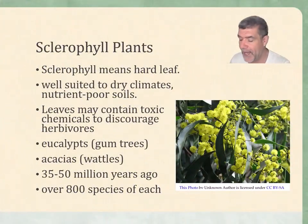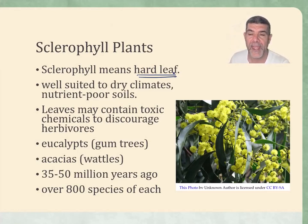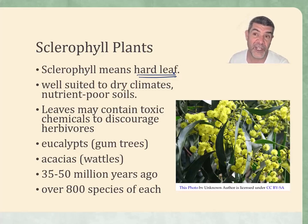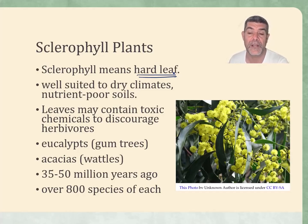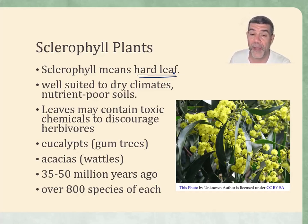So what are sclerophyll plants? Sclerophyll literally means hard leaf. One of the things you notice about a lot of Australian native plants is that the leaves are not like lettuce — they're not soft. They're very hard and crunchy, and they're filled with all sorts of different toxins, particularly the oils we know so well from the classic eucalypts. Part of the reason they are like this is because it has enabled them to be very well suited to dry climates.